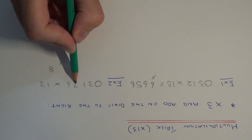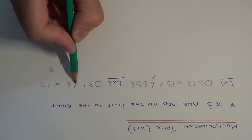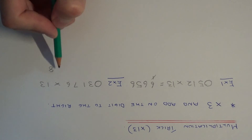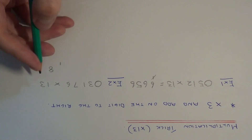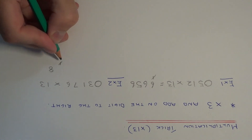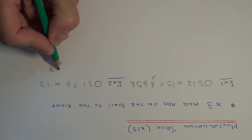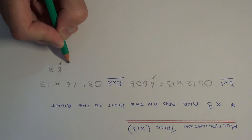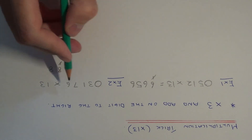Next, multiply the 7 by 3: 7 times 3 is 21. Add on the digit to the right — 21 add 6 is 27 — plus the 1 that I've carried makes 28. So put the 8 next and carry the 2 into the next column.